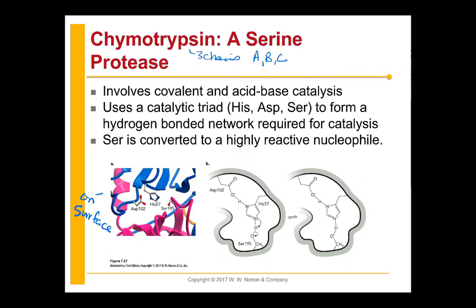Chymotrypsin is going to digest and cleave the backbone of our dietary protein. We use it in chemistry to determine a peptide sequence — we know where chymotrypsin cleaves. But what it does normally in the body is cleave our dietary proteins, so it's super important. You're going to see two different mechanisms here: covalent catalysis and acid-base catalysis.